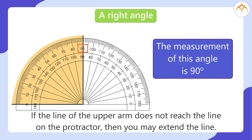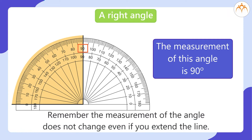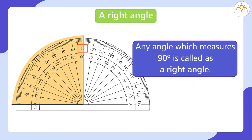If the line of the upper arm does not reach the line on the protractor, then you may extend the line. Remember, the measurement of the angle does not change even if you extend the line. Any angle which measures 90 degrees is called a right angle.